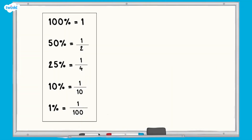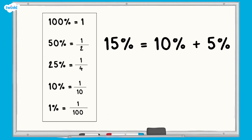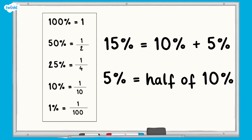We can use these facts to calculate any percentages. For example, to find 15% we can find 10% and then half that to find 5%. We can then add together 10% and 5%.